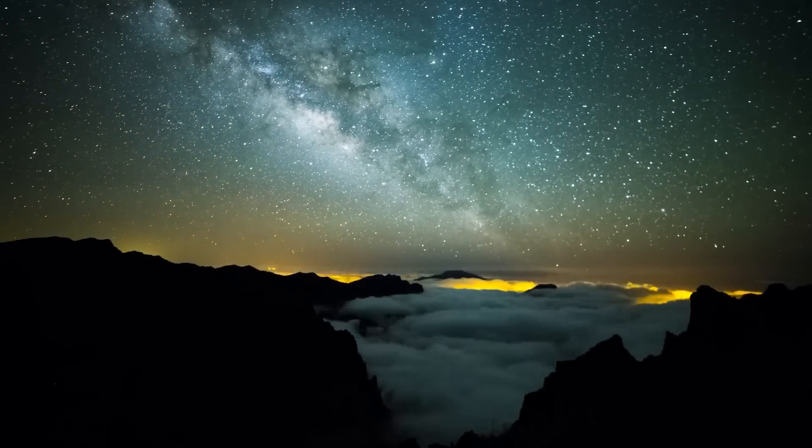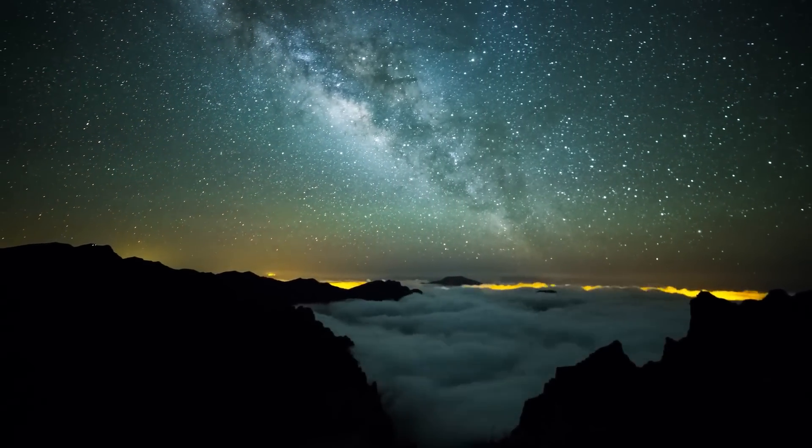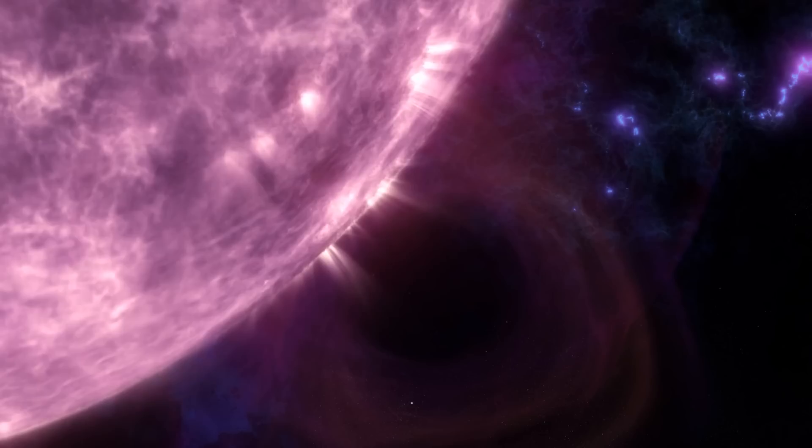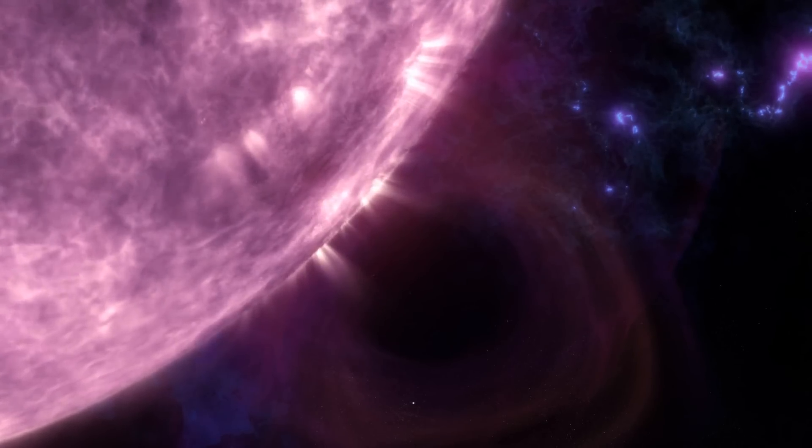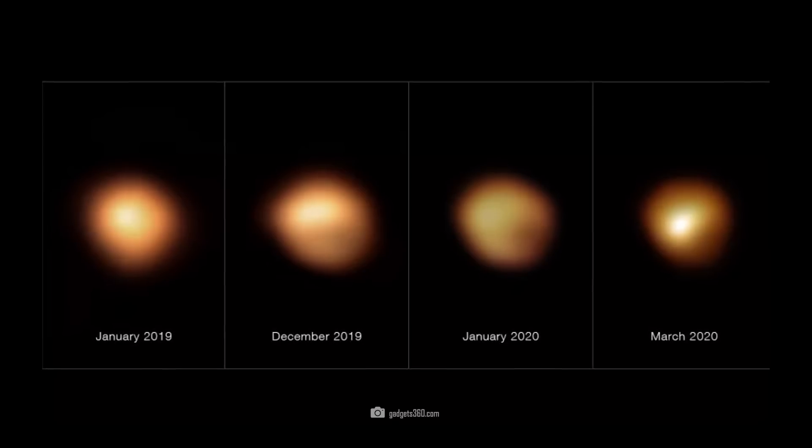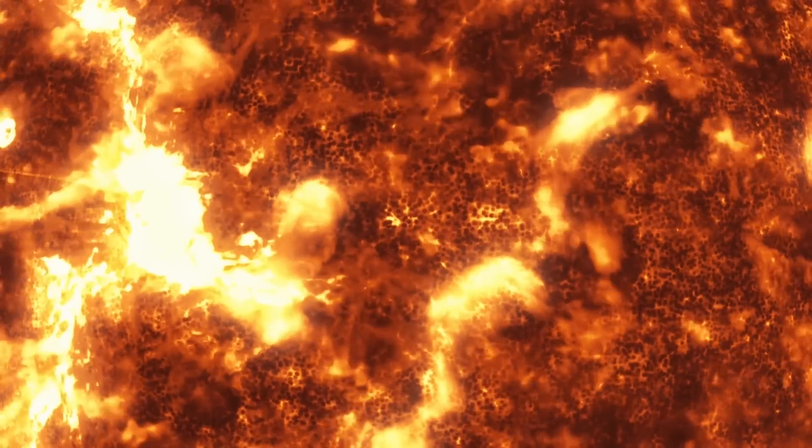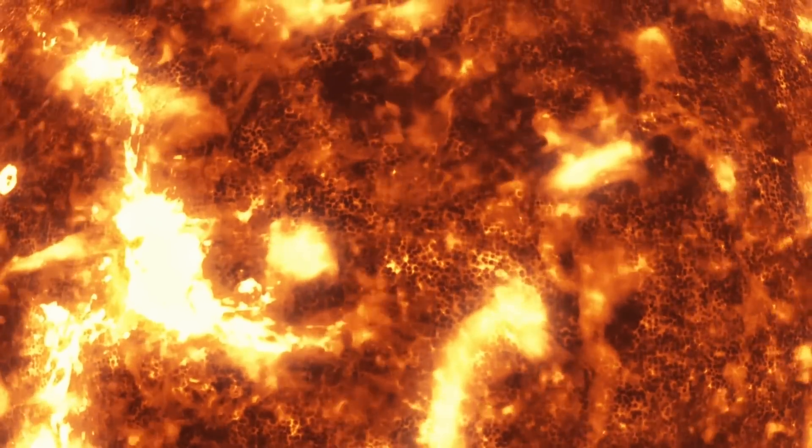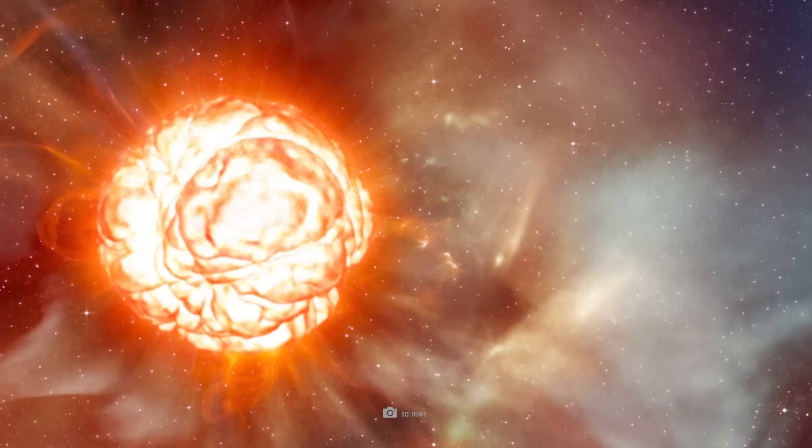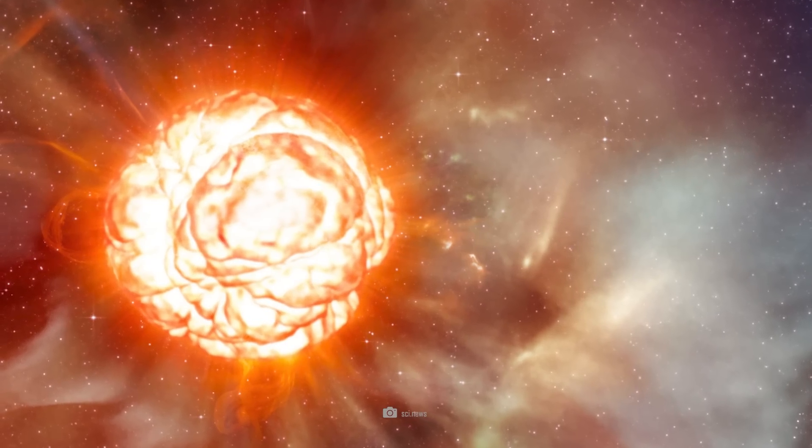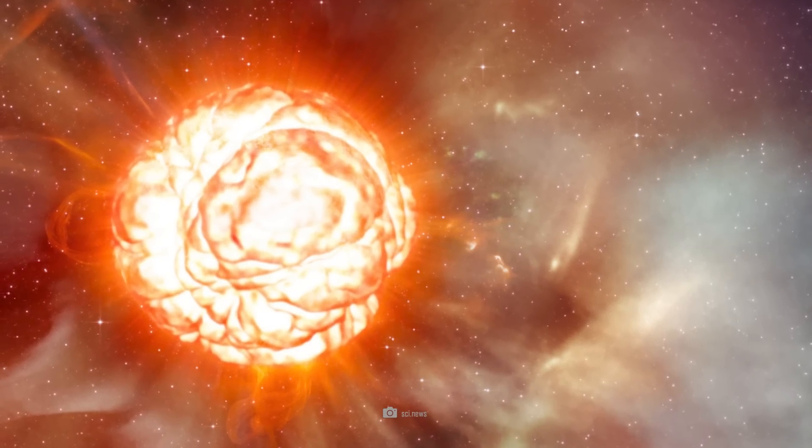It will be exciting for us as soon as the supernova becomes visible, and we are already following every little change on the star. In 2019 and 2020, the red supergiant Betelgeuse experienced a dramatic decrease in brightness, which subsequently became known as the Great Dimming Event. This sudden drop in brightness led to speculation that the star was about to explode.